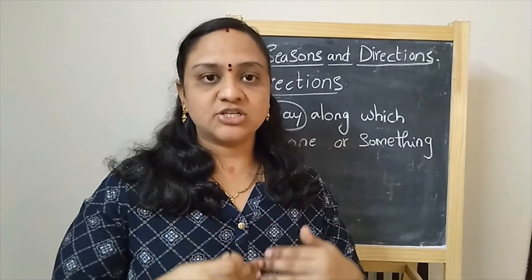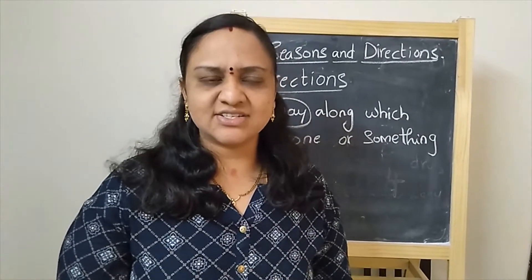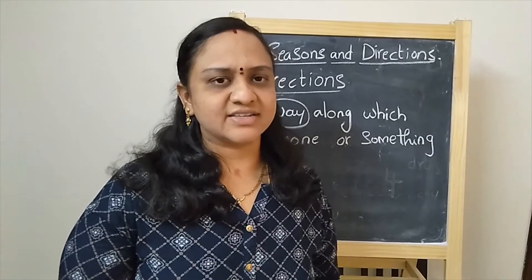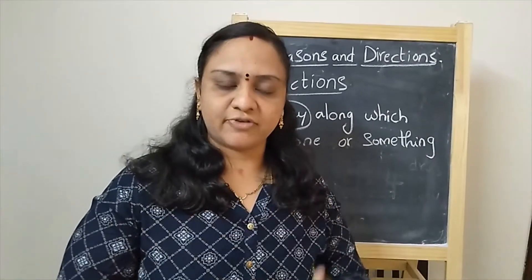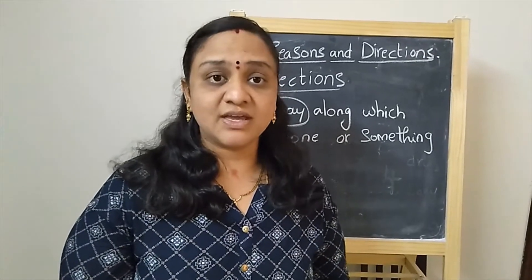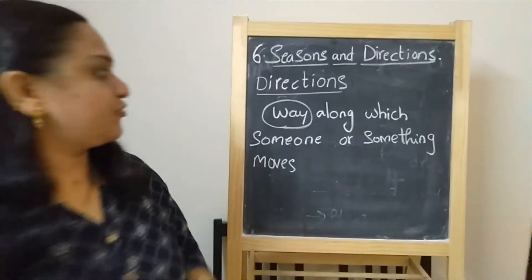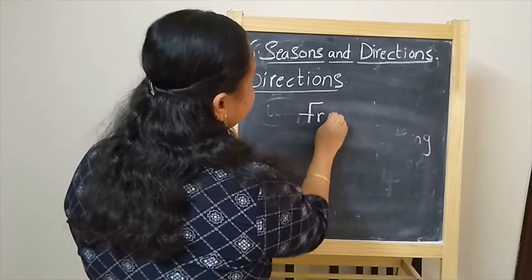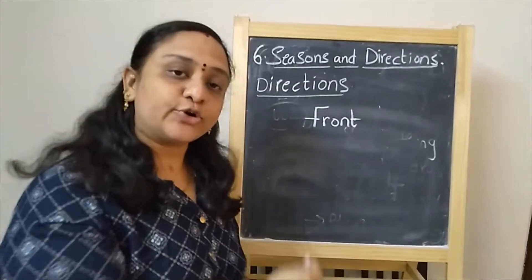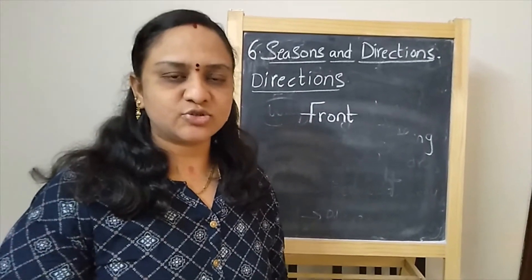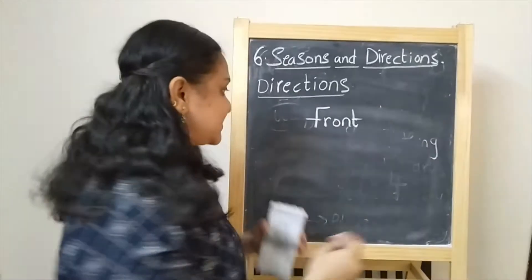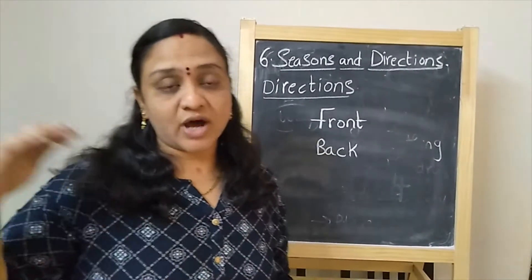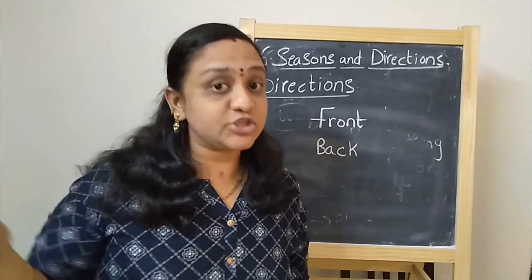Teacher came and she stood on the dais. Where is the dais, children? We have a dais in our classroom. Teacher is standing on the dais. Is she standing in front of you or back of you? The dais will be on the front side. So teacher is in front of you. You all remember your classrooms, right? Where will your bookshelves be? Back side. And to one side, you will have the door from which you enter into the classroom.